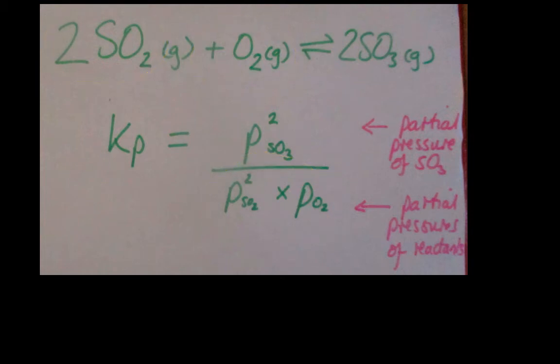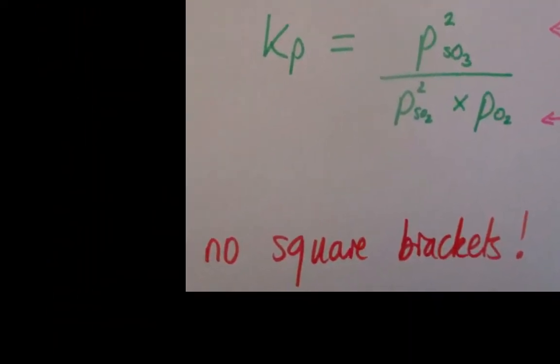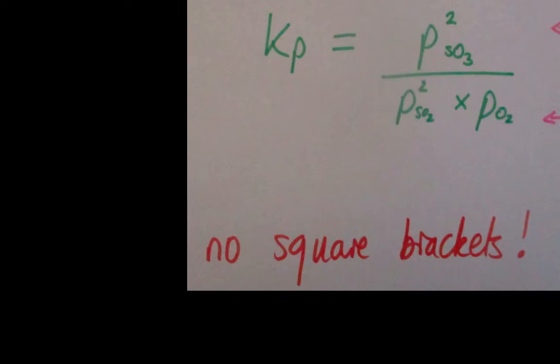And, as with Kc, if we've got two moles in our stoichiometric equation, then we raise our partial pressure to a power. For example, here we've got partial pressure squared. Just take care here, we are not talking about concentrations anymore, so don't put any square brackets in anywhere. We're talking about partial pressures.